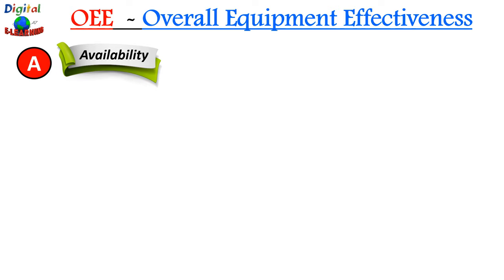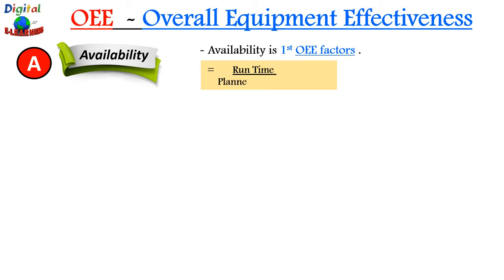First is availability — the first OEE factor. It takes into account the availability of machines, which includes planned and unplanned stops due to breakdown. Planned stops include planned maintenance, operator training, quality checks, cleaning of machines, or meal breaks. Unplanned stops are not scheduled but happen suddenly during running operations — due to technical faults, inconsistent material supply, or machine wear and tear. Availability is calculated as run time divided by planned production time.